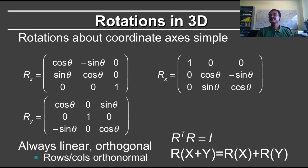Let's now consider rotations in 3D about the coordinate axes. The 2D case could be considered a special case where we are rotating about the z-axis. Since the z-axis does not change, the matrix values will be 0, 0, 0, 1 for the z row and column, and the x and y coordinates will be the same as before: cos minus sine, sine cos.